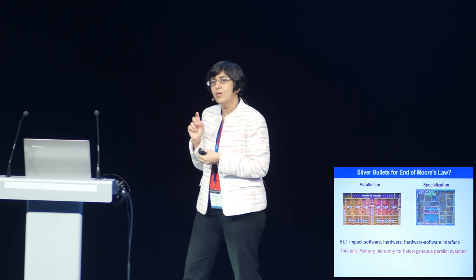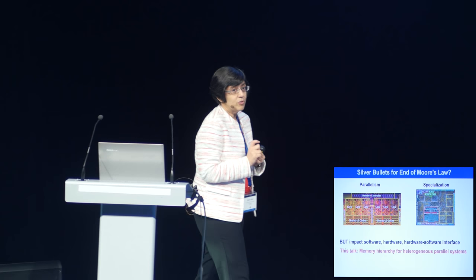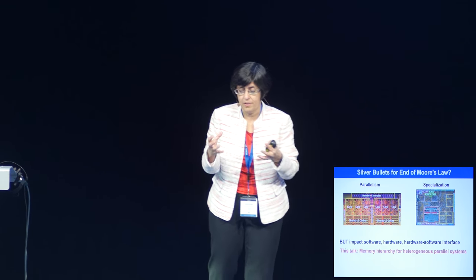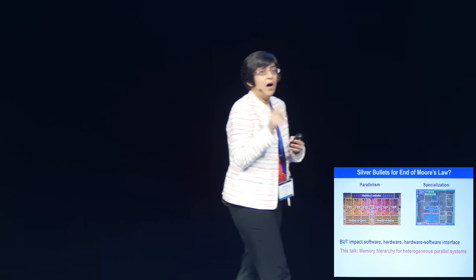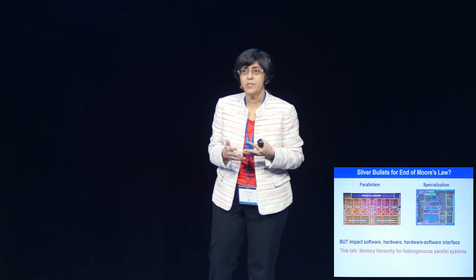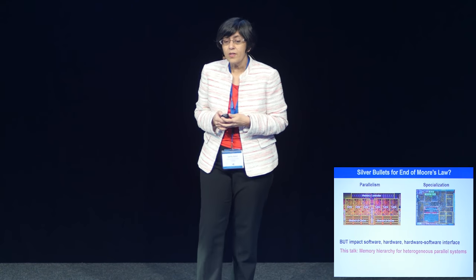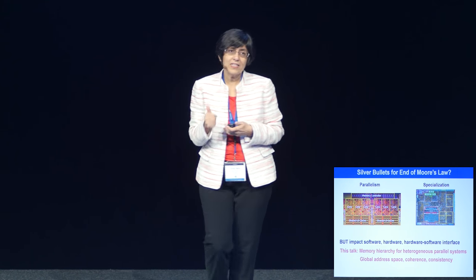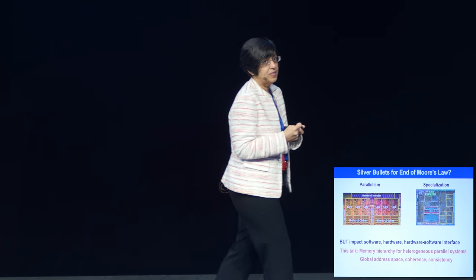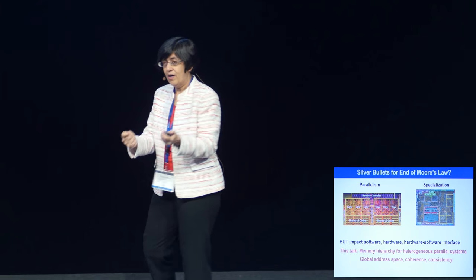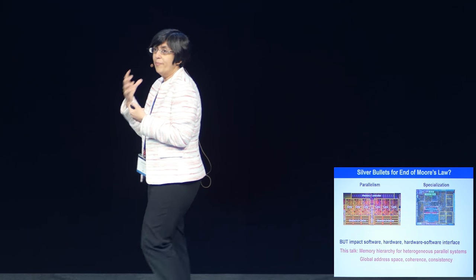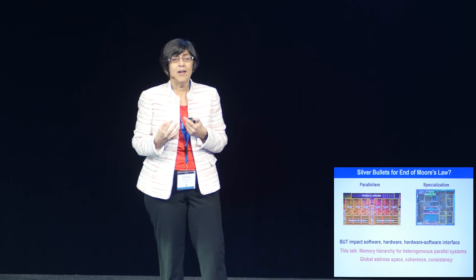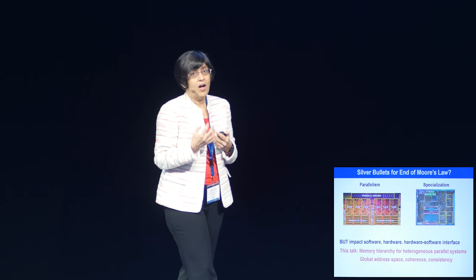These techniques impact software, hardware, and the hardware-software interface. This talk is going to focus on the memory hierarchy for heterogeneous parallel systems — when you're bringing together a whole bunch of specialized components into a parallel architecture, what happens to the memory hierarchy? The memory hierarchy is a big obstacle to improving performance, as well as a big consumer of energy. I'll discuss global address space, coherence — the meat of the hardware — and consistency, which is the meat of the hardware-software interface.